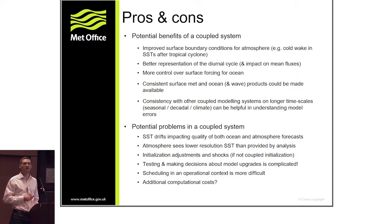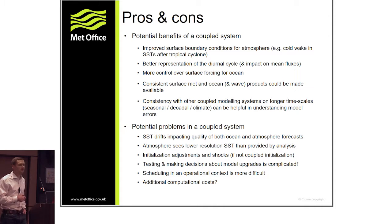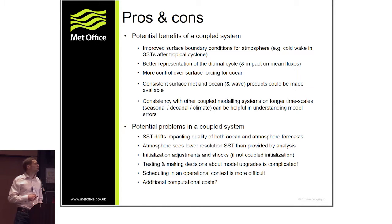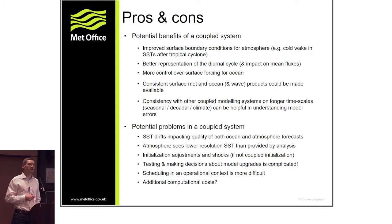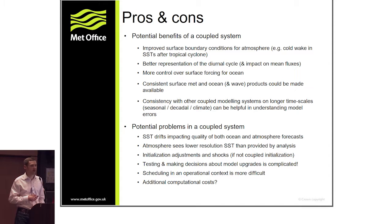As we move to higher resolution and higher temporal resolution — hourly products — that consistency could be particularly important. For some users, a compromise in quality of one model component may be compensated for by the consistency of the full dataset. Using a coupled model also gives consistency with other coupled modeling systems — within the Met Office that means consistency with seasonal, decadal, and climate models — which can help in understanding model errors and potentially using bias information for bias-correcting short-range forecasts.